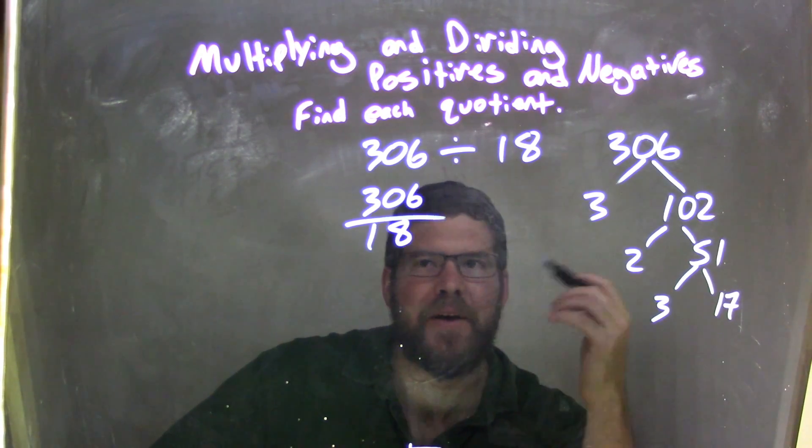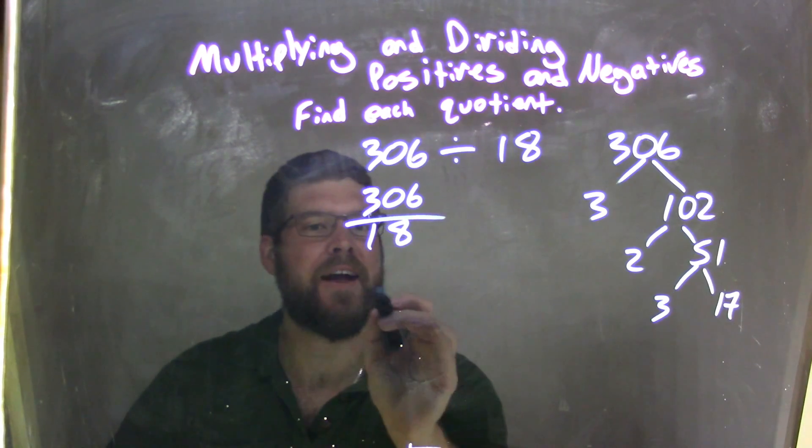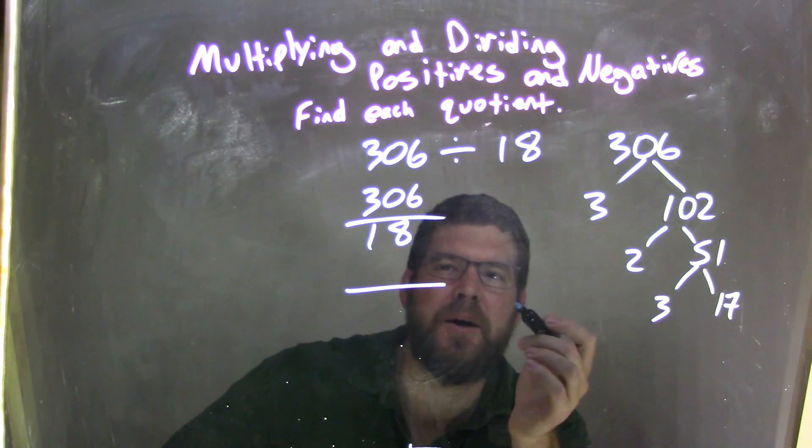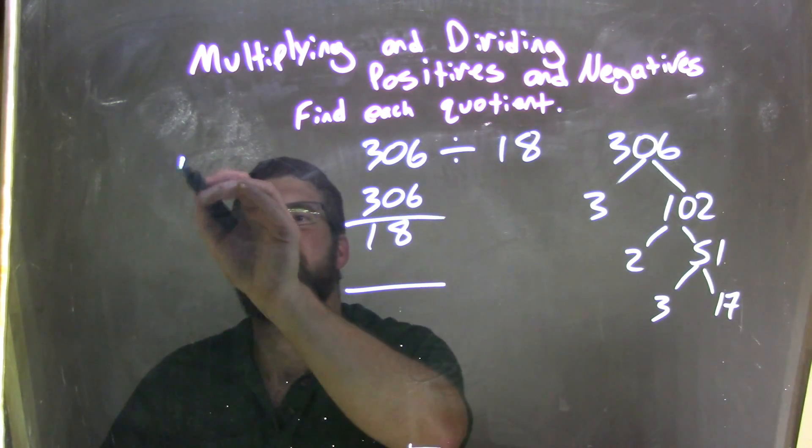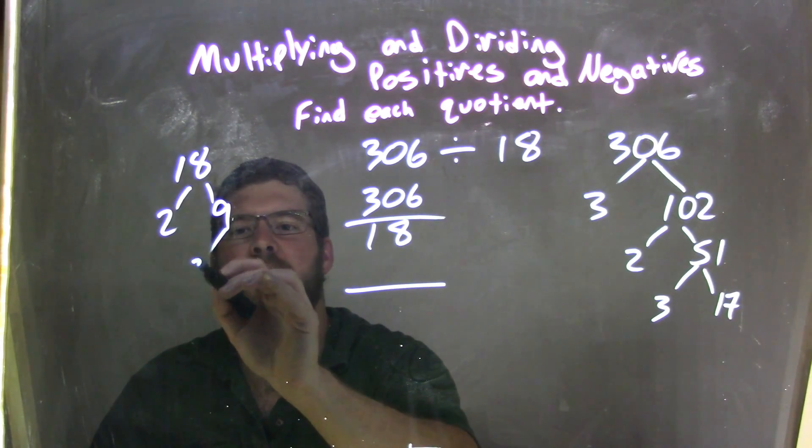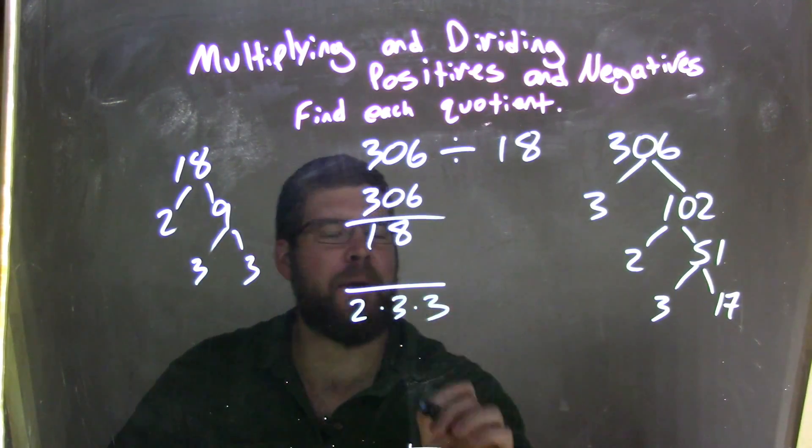Well, the denominator, I can break down. 18, I can break down pretty easily. 18, let's do it here. 18, that's 2 times 9, and 9 is 3 times 3. So, now we have 2 times 3 times 3 in the denominator.